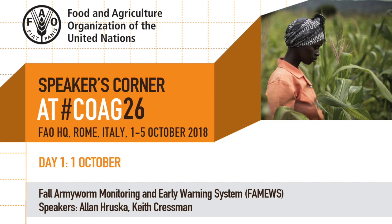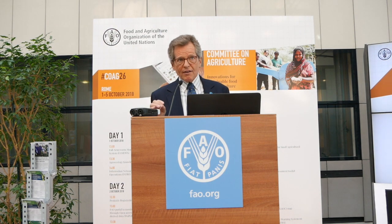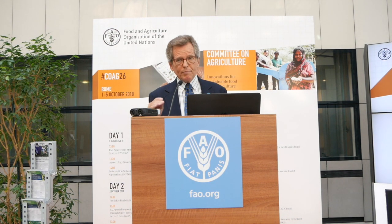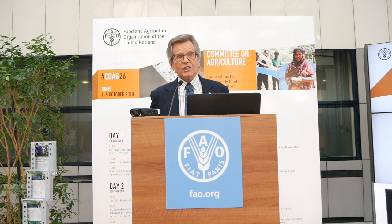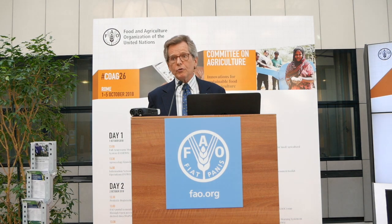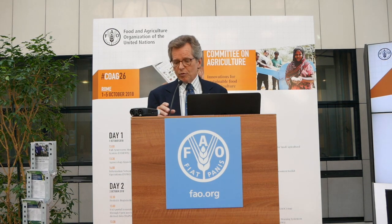The Fall armyworm is an important global pest that has moved out of the Americas in the last two years, and is now infesting tens of millions of hectares of crops, mostly maize, around the world. Our work has been focused on Sub-Saharan Africa because it's only recently moved past Sub-Saharan Africa into India and Yemen in the last few months. FAO has responded over the last two years, working very closely with many member states and other stakeholders to develop a series of tools and recommendations on how to respond to fall armyworm.